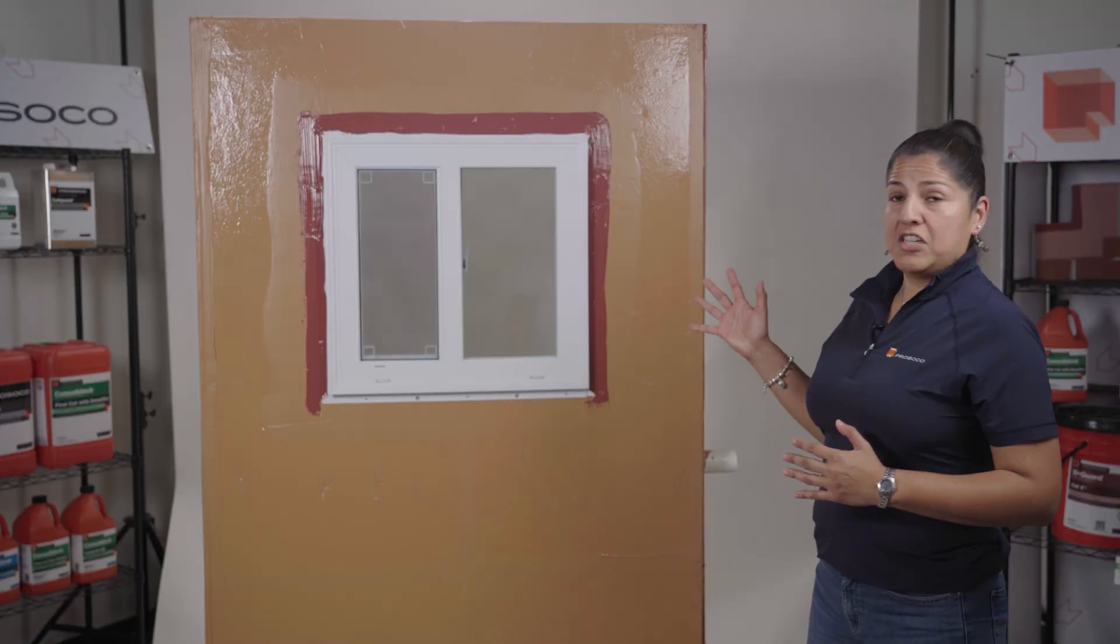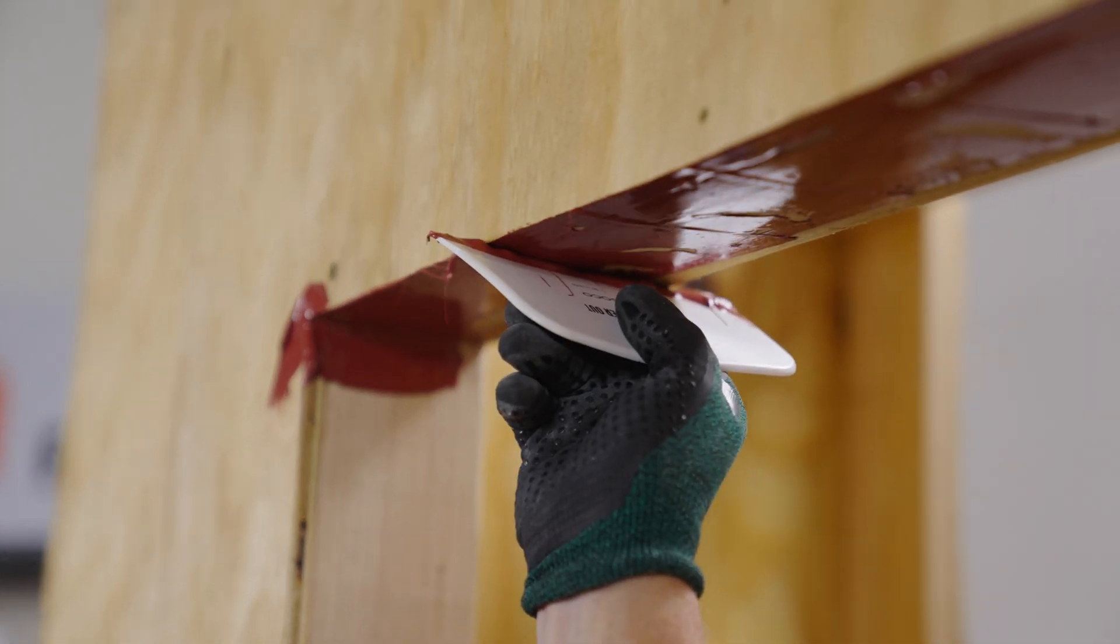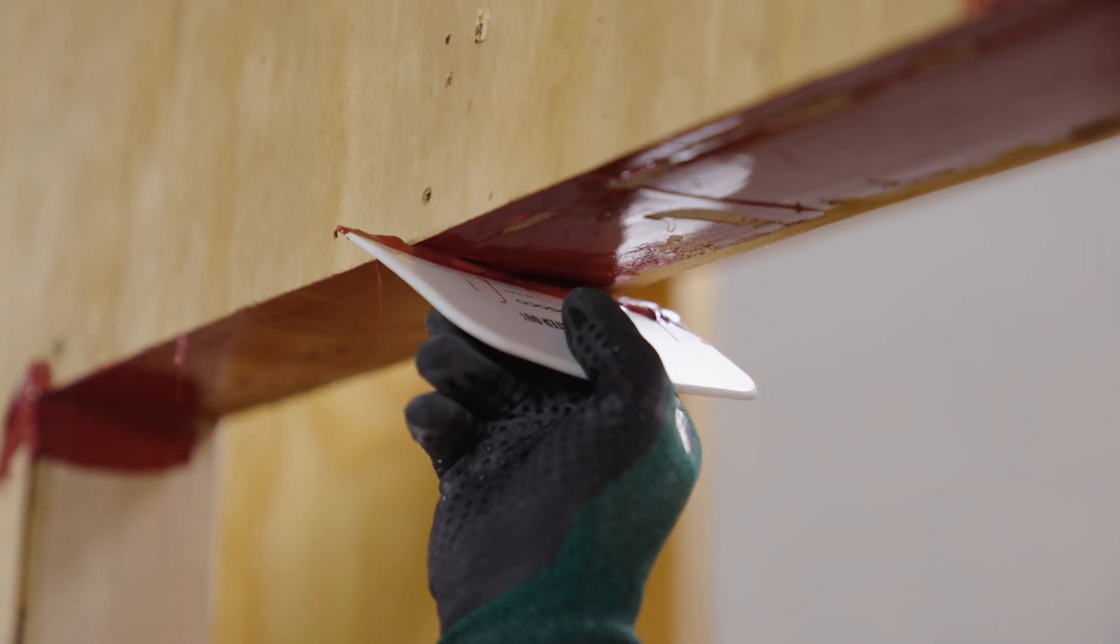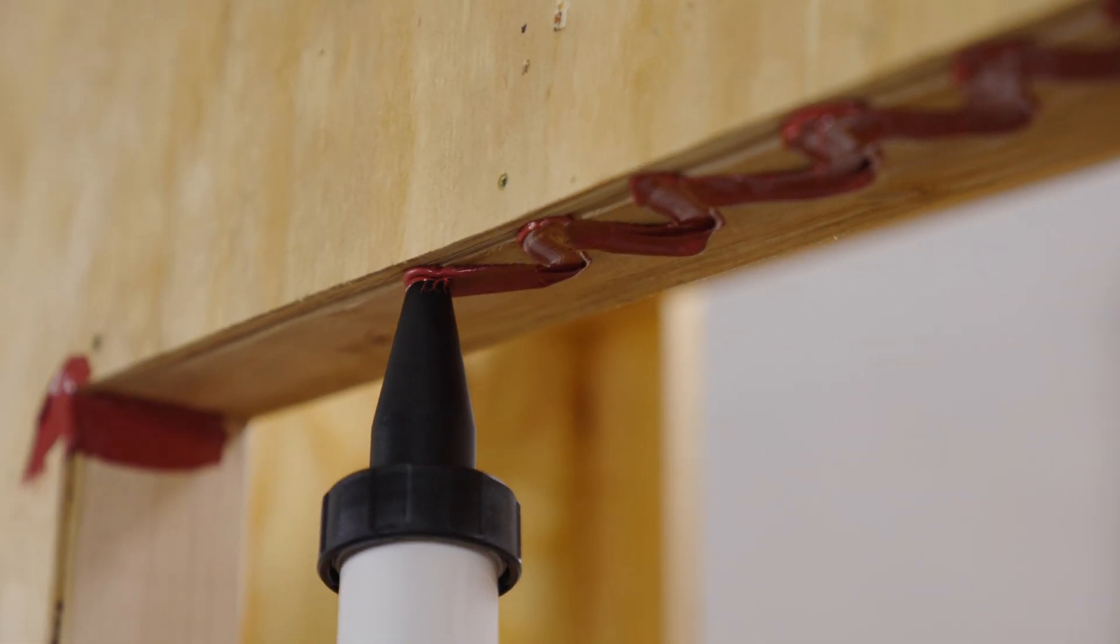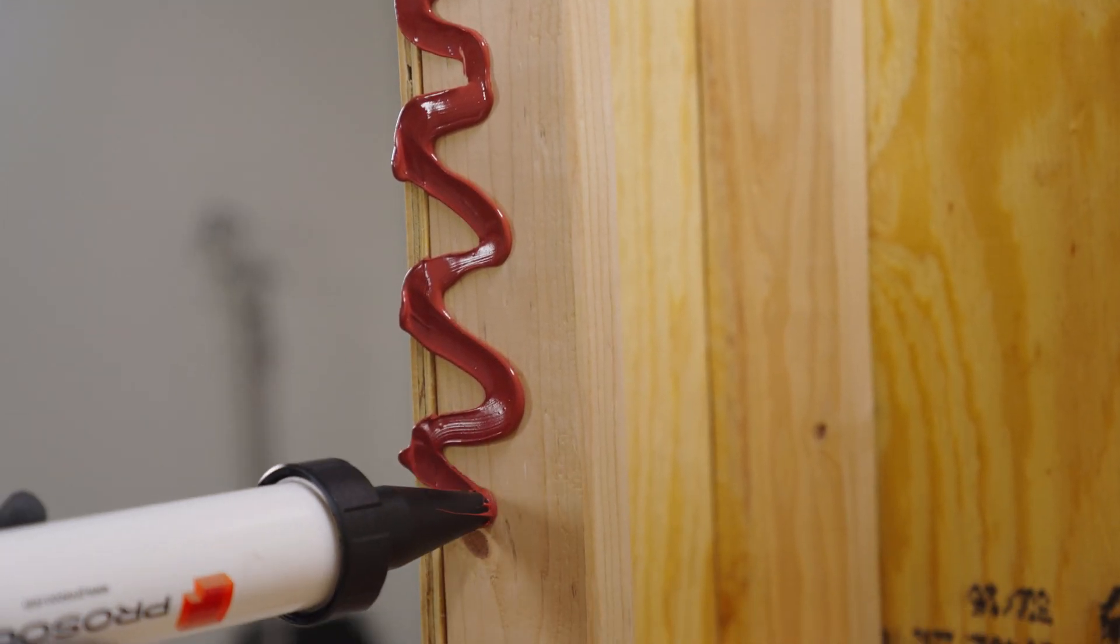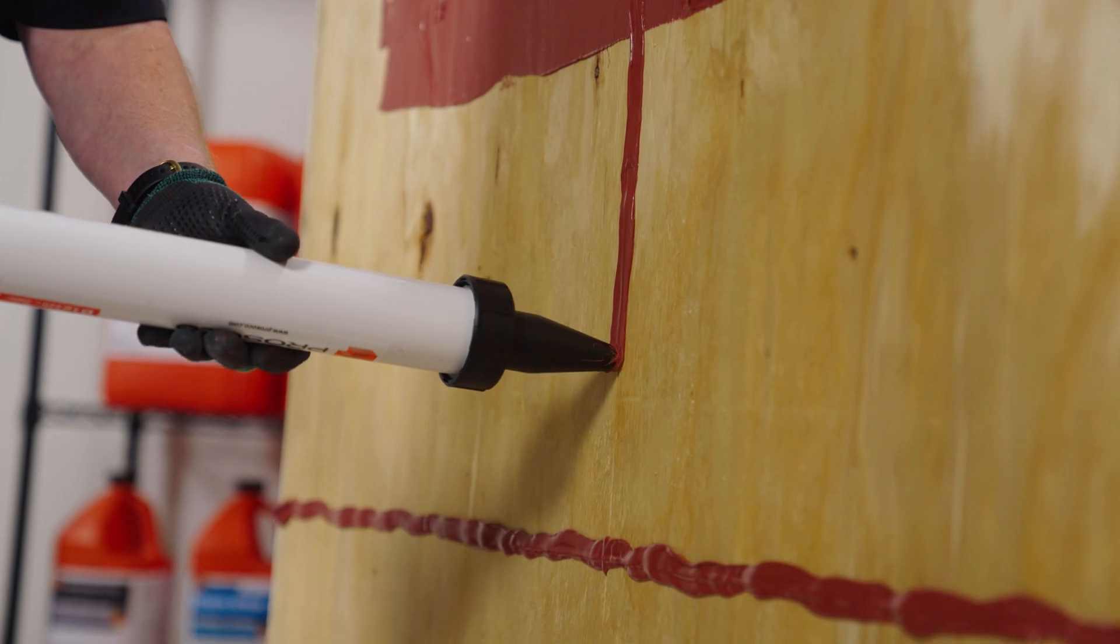Today we're going to talk about Fast Flash in detail. Funny to say detail, it is our detailing membrane. Fast Flash is the product that's used on all your rough openings, transitions, any kind of penetrations, through rolls, and transition membranes. When in doubt, use Fast Flash.